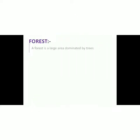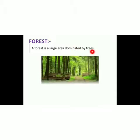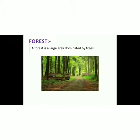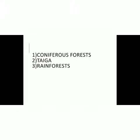Forest is an area that is dominated by trees — a large area covered by trees is known as a forest. Forest has different types; it is divided into three categories: coniferous forest, taiga, and rainforest. In the upcoming slides we will be analyzing each type in detail.